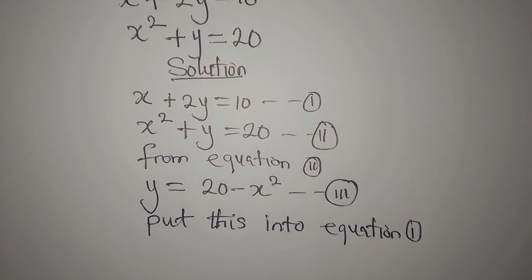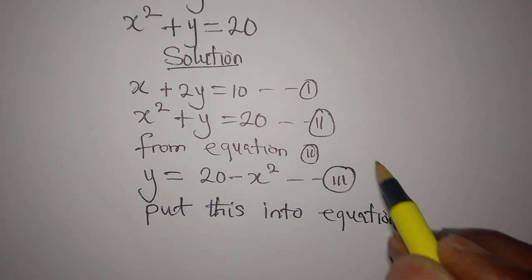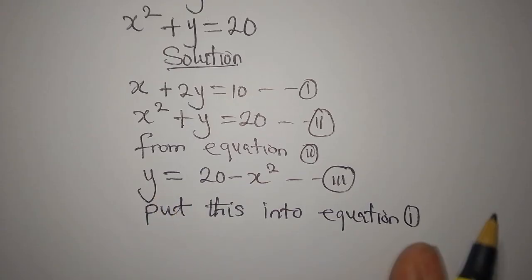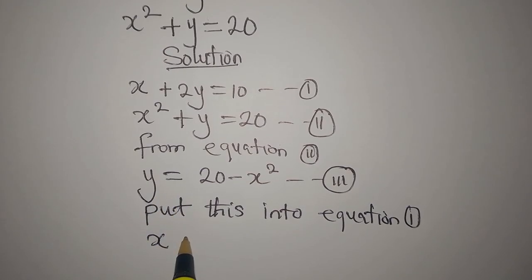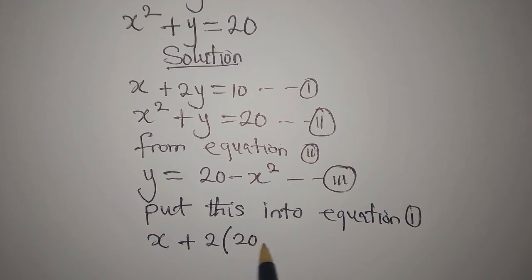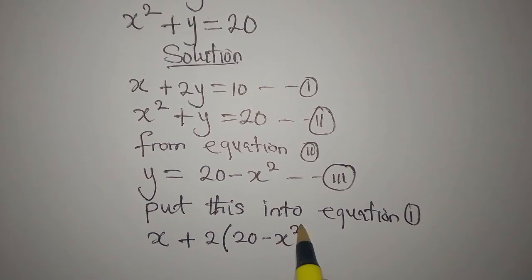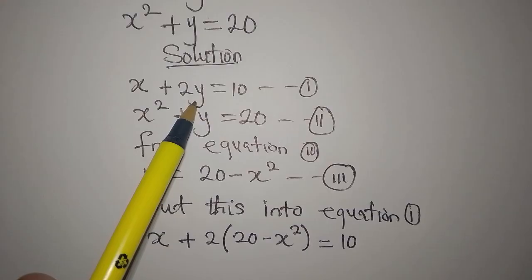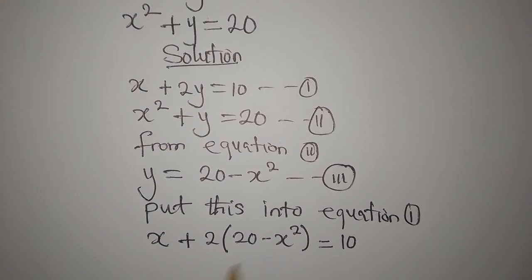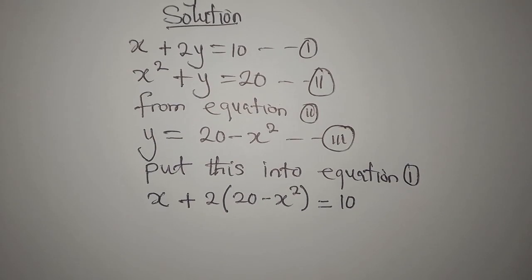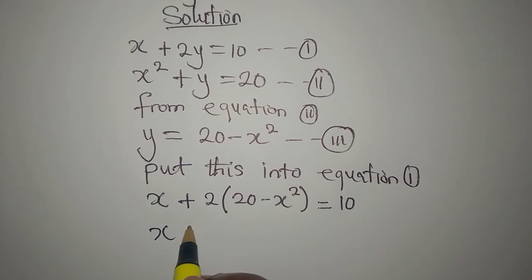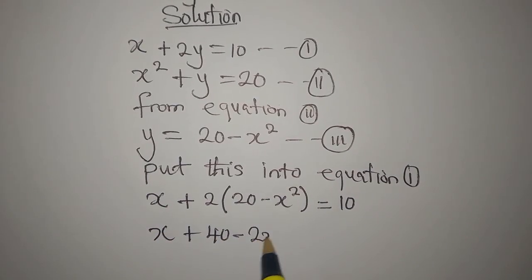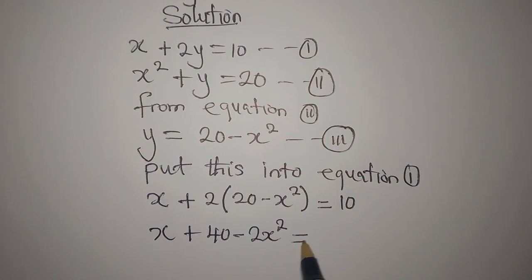We put this into equation 1 because it is equation 2 that birthed equation 3. So in place of y in equation 1, I'll put 20 minus x squared and this is equal to 10. So we open the bracket and we have x plus 40 minus 2x squared equals 10.